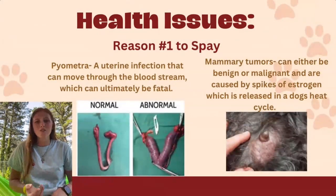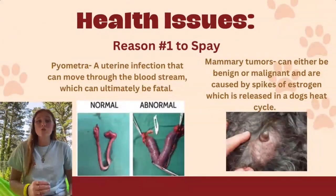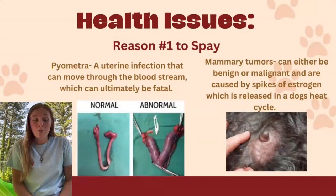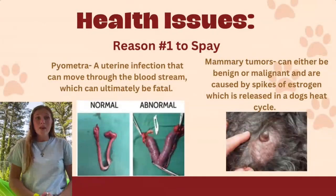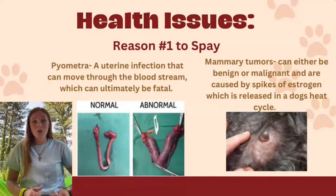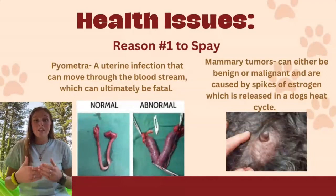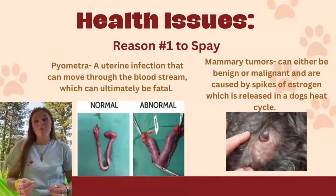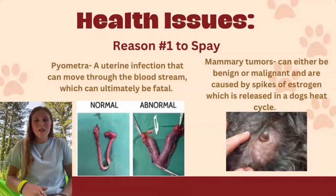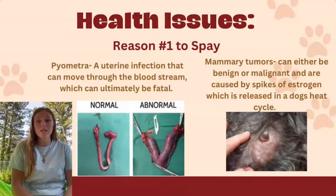The uterus just builds up an infection — it can cause a fever, but without exploring, if we know your dog is not spayed, that's normally a trigger. We also have mammary tumors — breast cancer in our pets. They can be benign or malignant, and they're caused by spikes of estrogen released in a dog's heat cycle. Large amounts of estrogen can cause these mammary tumors. They might show up as small, and owners may not notice until they get very large, which can be fatal. This is another reason why you should spay your animal.